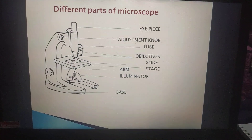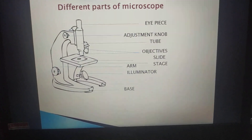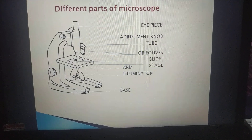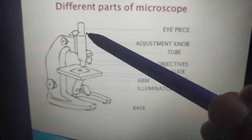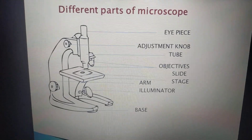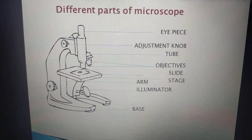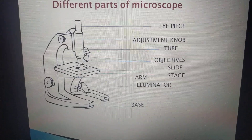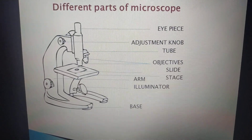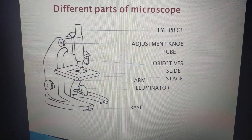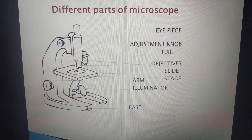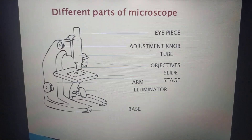Here I am going to tell you the different parts of the microscope and their functions. The very first part of the microscope is the eyepiece, also called the ocular lens. This part of the microscope is used by us to observe whatever we want to see.